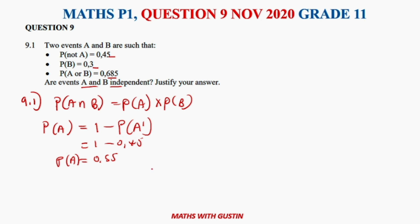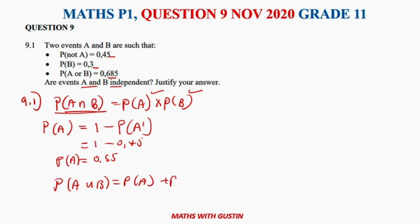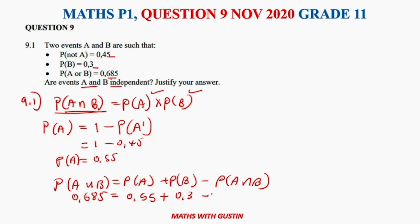We also need the probability of A and B. We know from the general formula that the probability of A or B equals the probability of A plus the probability of B minus the probability of A and B. This is our general formula. The value of 0.685 is equal to probability of A, which is 0.55, plus probability of B, which is 0.3, minus the probability of A and B — which is what we are looking for.